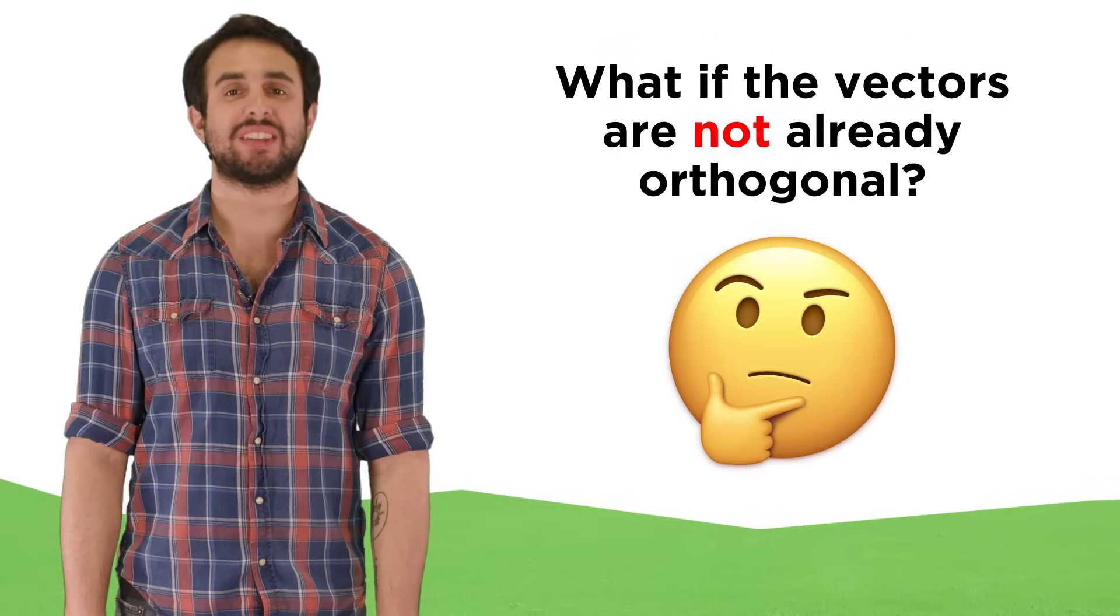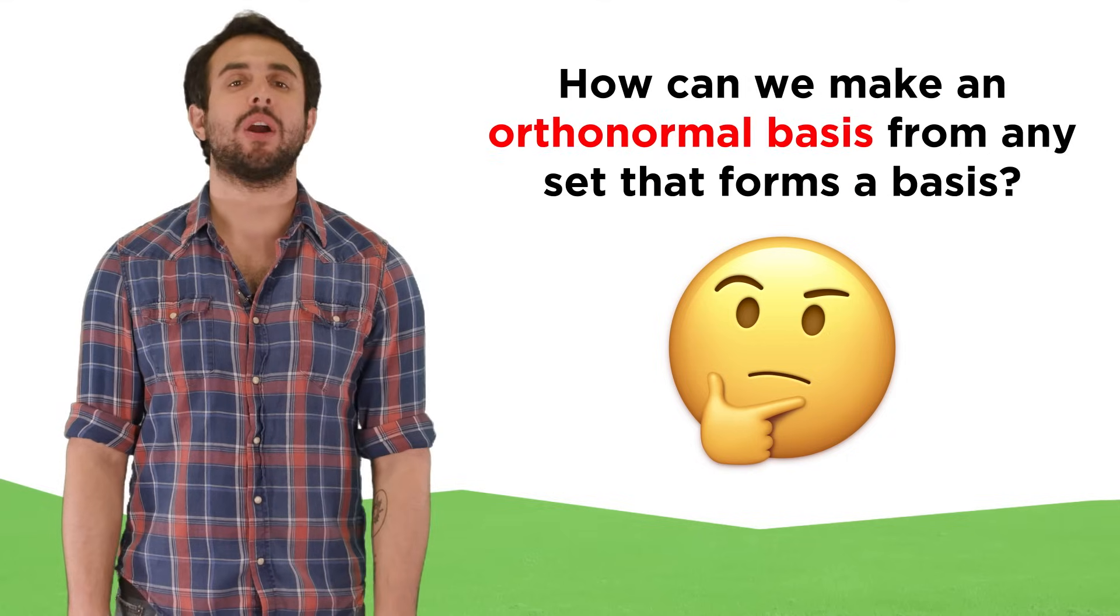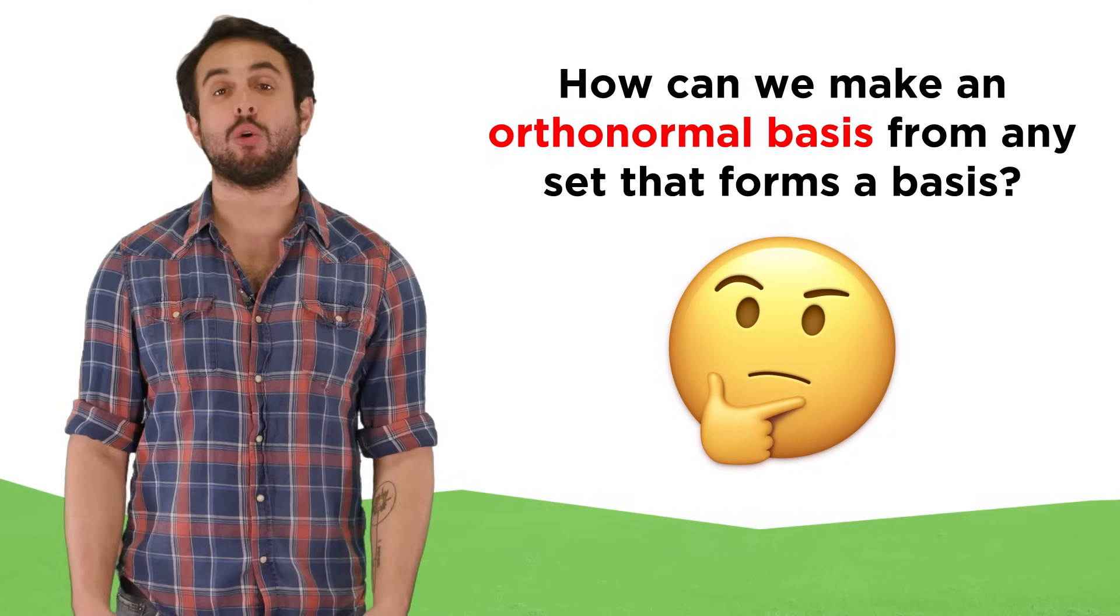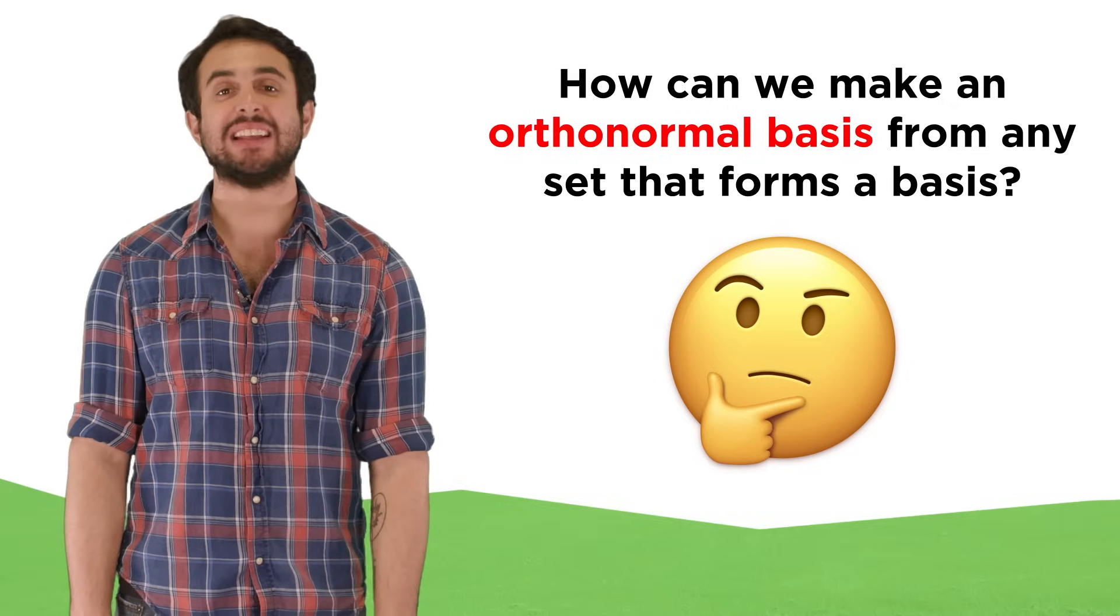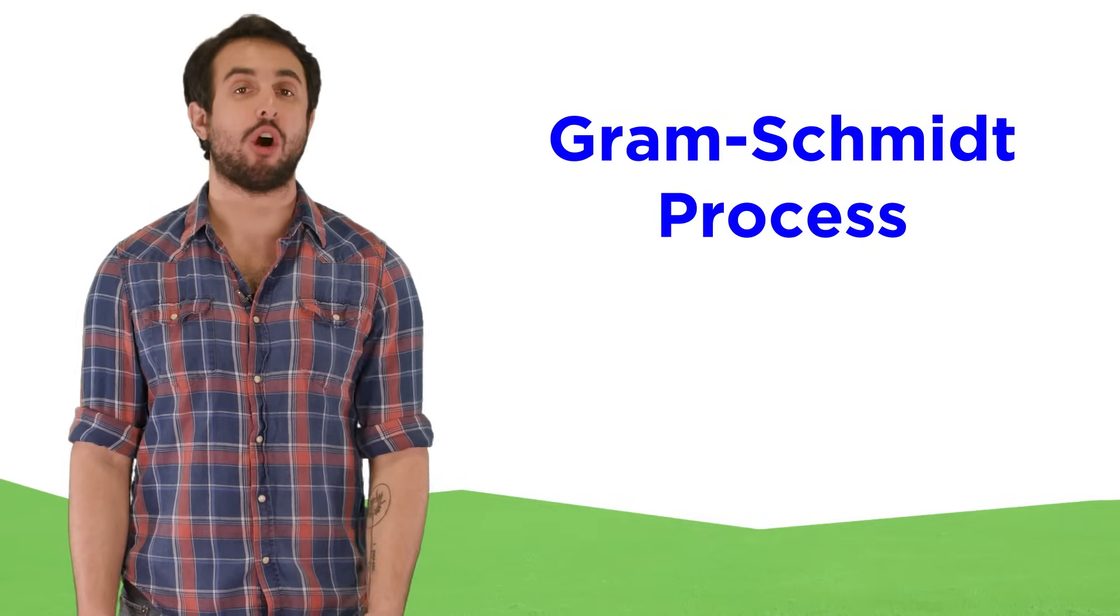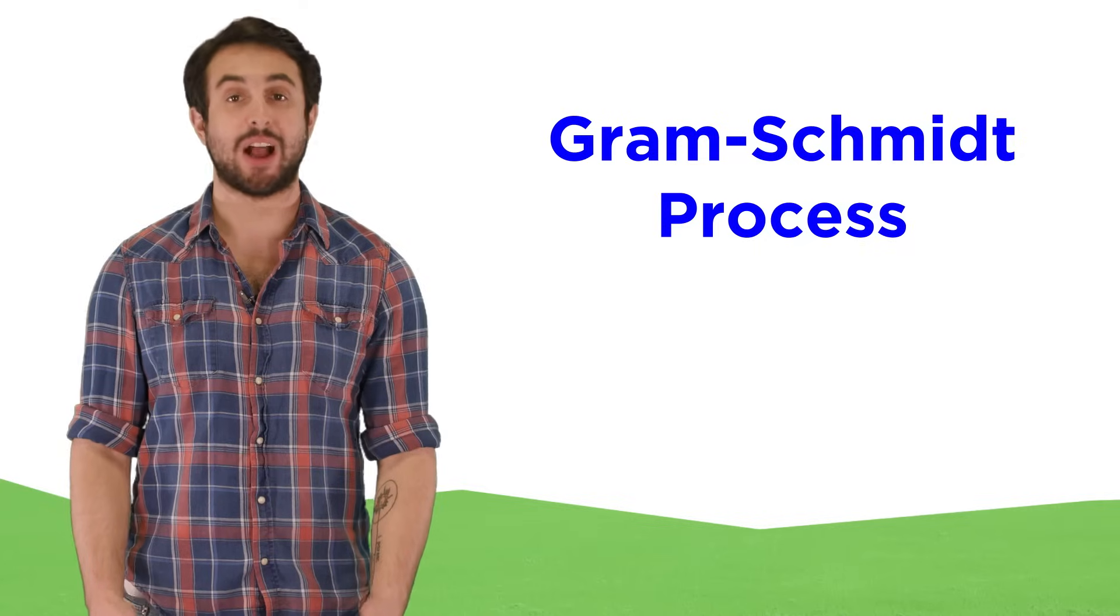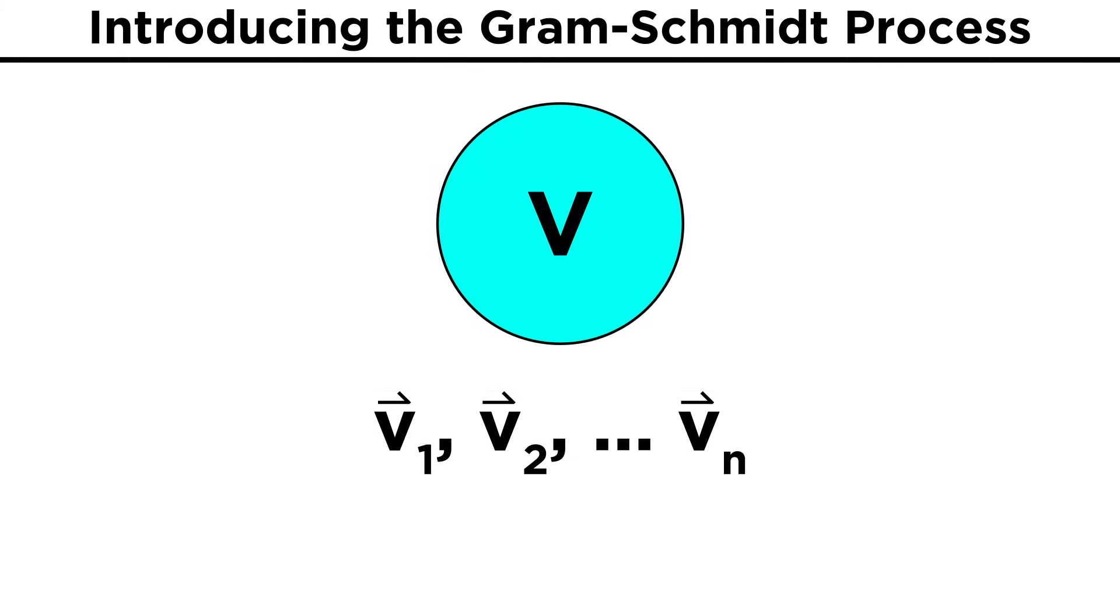But what if we start with a set of vectors that are not already orthogonal? Furthermore, how do we go about making an orthonormal basis for a vector space given any set of vectors that form a basis? To do this, we need to learn something called the Gram-Schmidt process, so let's take a look at this now.